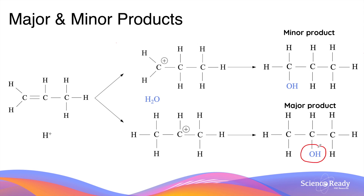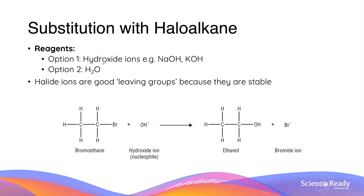In this case, 2-propanol is the major product formed in greater quantity because the hydroxyl group is bonded to the carbon atom with two carbon neighbors, whereas in the minor product, 1-propanol, the alcohol group is bonded to the carbon with only one adjacent carbon atom. So Markovnikov's rule states that the major product will be the one where the alcohol group is bonded to the carbon atom with the greatest number of carbon neighbors.